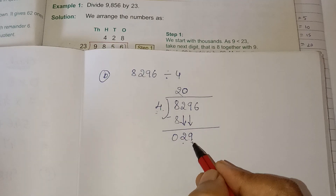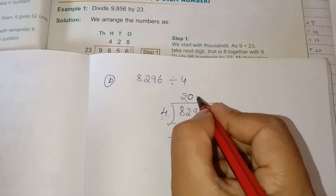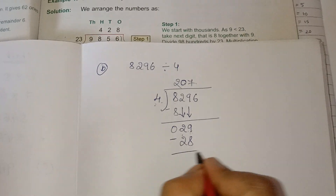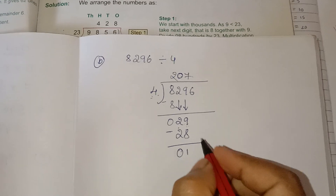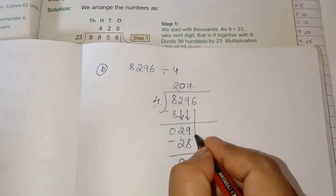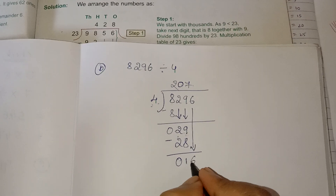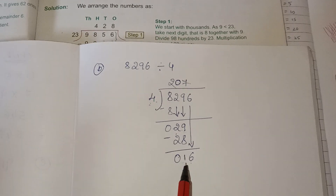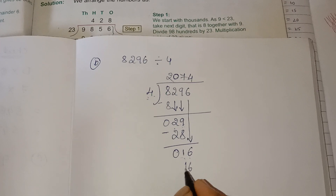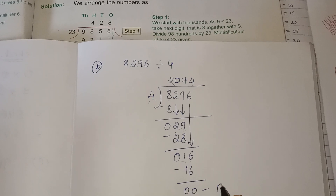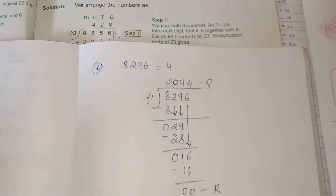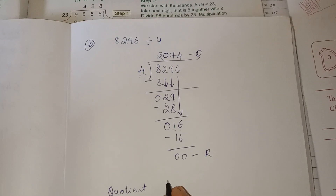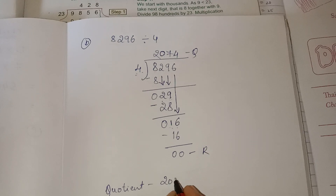Recall the table of 4: 4 fives are 20, 4 sixes are 24, 4 sevens are 28. So 4 sevens are 28. Subtract — get 10. Then take the next number down: 6. Now I have 16. 4 fours are 16. The quotient is 2074 and the remainder is 0.